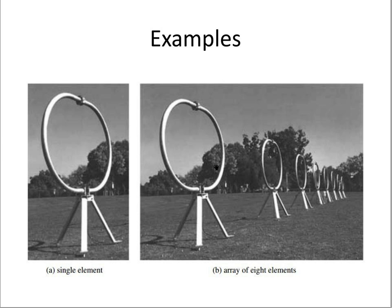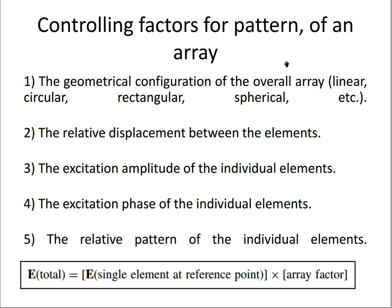The basic question is: how can we control the radiation pattern after placing N number of elements? After placing N number of elements, your gain and directivity increase. But the question is how we control the radiation pattern or the total pattern of this given system. The answer lies in the controlling factors. The first factor is the geometrical configuration of the overall array — if it is linear, circular, rectangular, or spherical, you will get different radiation patterns.